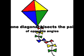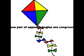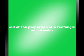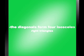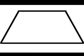One of the diagonals bisects a pair of opposite angles, and one pair of opposite angles are congruent. A square is a parallelogram that is both a rectangle and a rhombus. The properties of squares include all of the properties of a rectangle and a rhombus, and the diagonals form four isosceles right triangles.